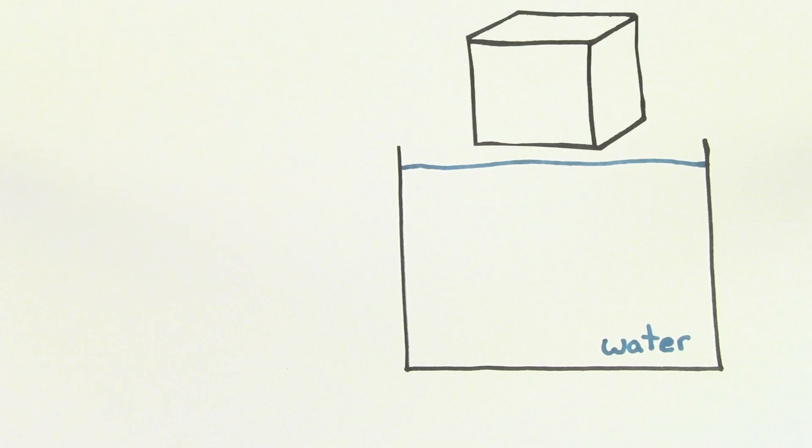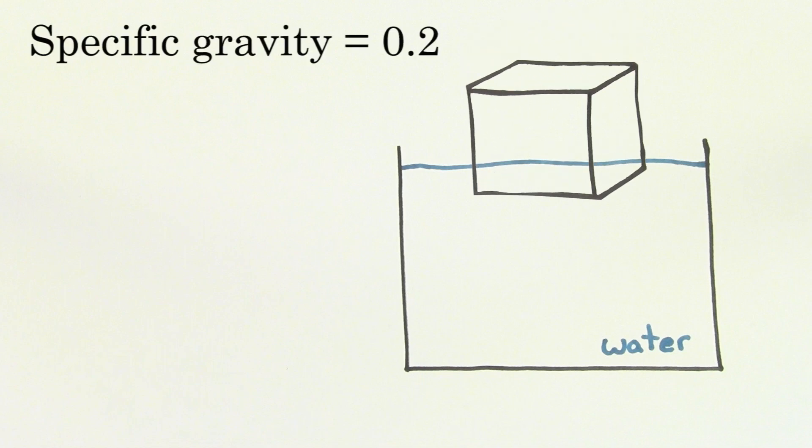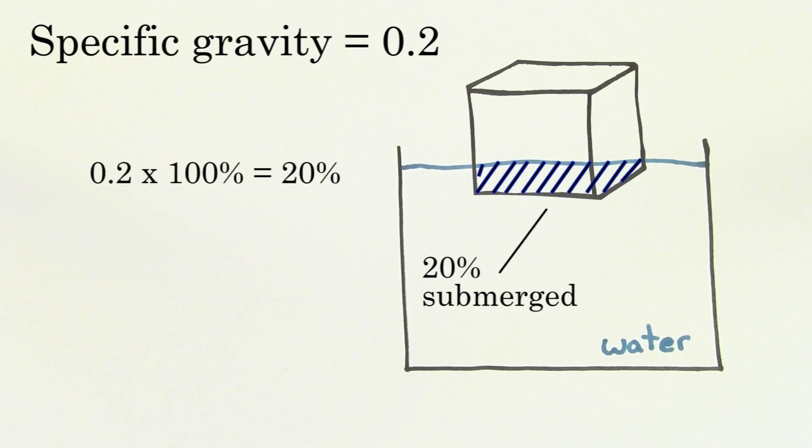For instance, say you let a cube of wood with specific gravity 0.2 float in water. Since the specific gravity is 0.2, that means that 20% of the total volume of this wood is going to be submerged below the water while it's floating.